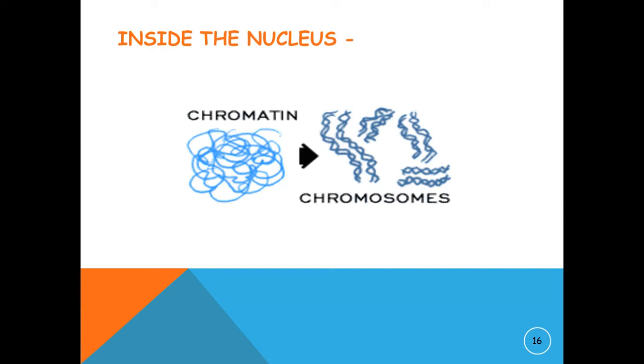Inside the nucleus, a chromosome contains hundreds of thousands of genes. Every normal human cell contains 23 pairs of chromosomes, for a total of 46 chromosomes.